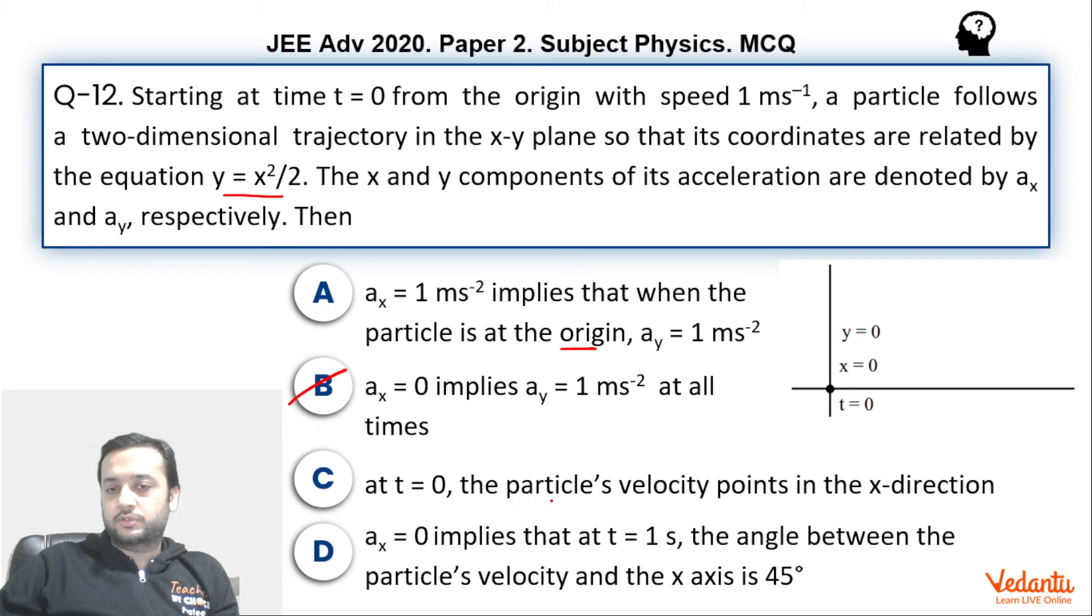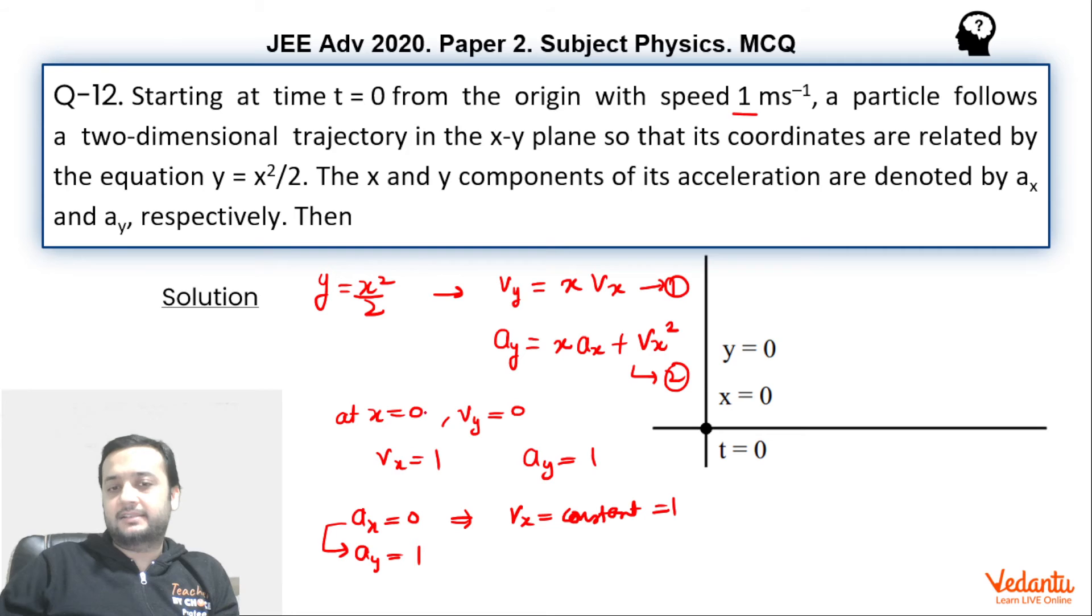At t equals to 0 particle's velocity points in x direction. This of course is correct because we have already seen that at t equals to 0 particle was at origin and at t equals to 0, the velocity in y is 0. Hence, its velocity is totally in x direction.